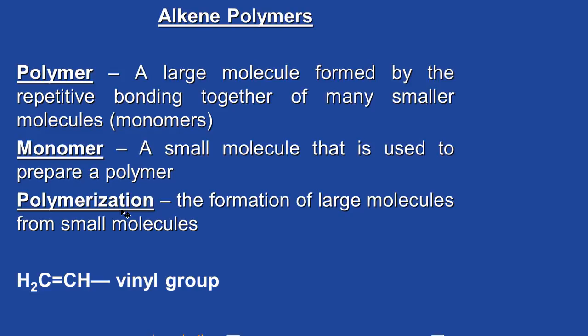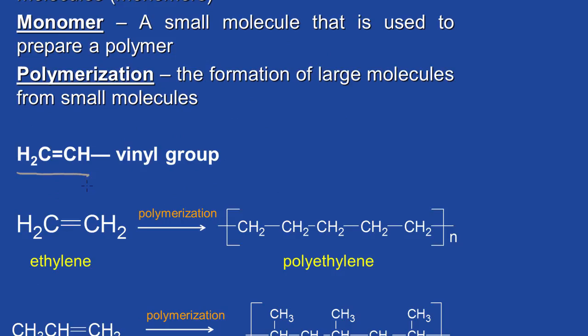Biopolymers are a bit more complicated than the synthetic polymers that we're going to talk about today. These monomers undergo a reaction called polymerization. We're not going to go into the details, but this allows the formation of polymers from these very small monomers. A polymer is made up of repetitive units of smaller molecules. This is called the vinyl group, and this vinyl group undergoes polymerization reactions when treated with a proper catalyst.